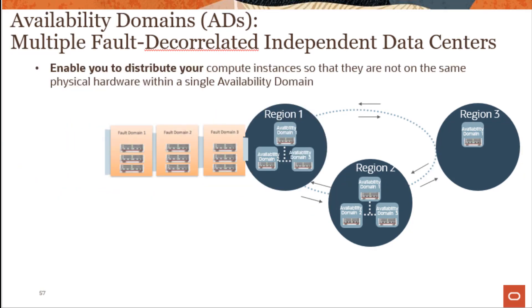Digging a little bit deeper into each AD — what's going on within each AD, which is actually a physical data center. Region 1 has three ADs, region 2 has three ADs, and region 3 has one AD. Within each AD, we have fault domains.